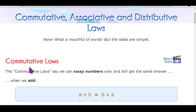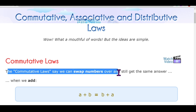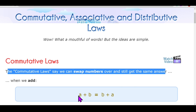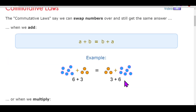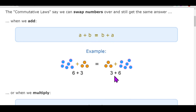Our first law is the commutative law. This law states that we can swap the numbers over and still get the same answer. It means that if any number a gets added to b, the result will be the same as when we add b to a — that means a plus b equals b plus a. Even if we change the order of the addends, we will get the same answer.